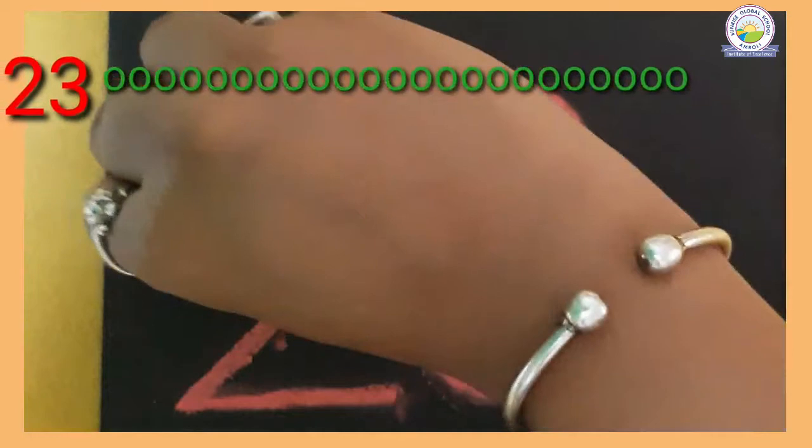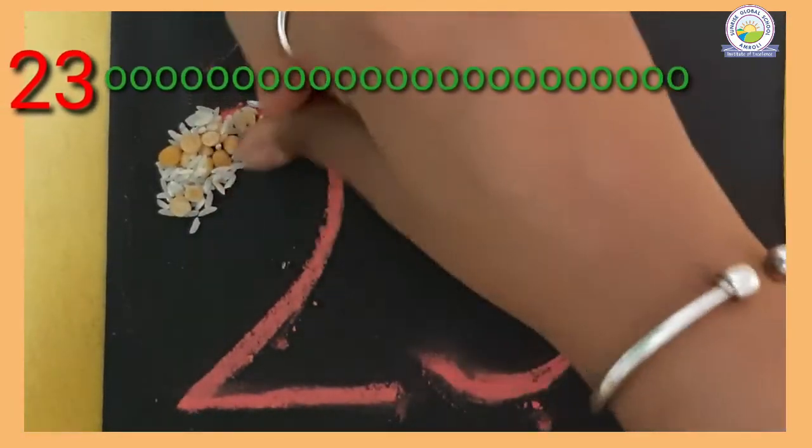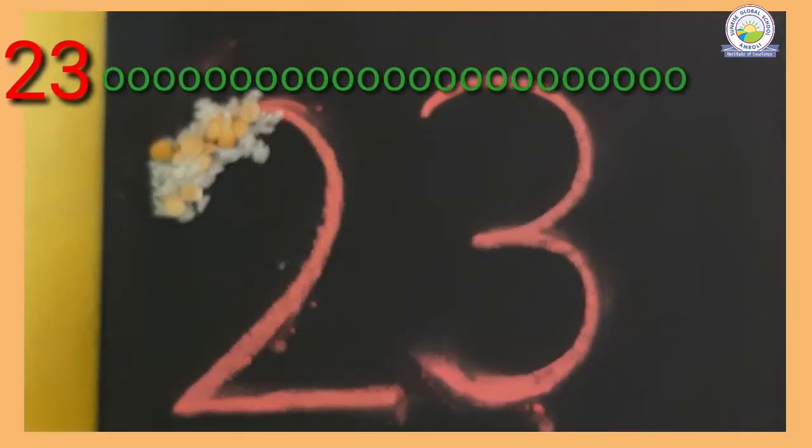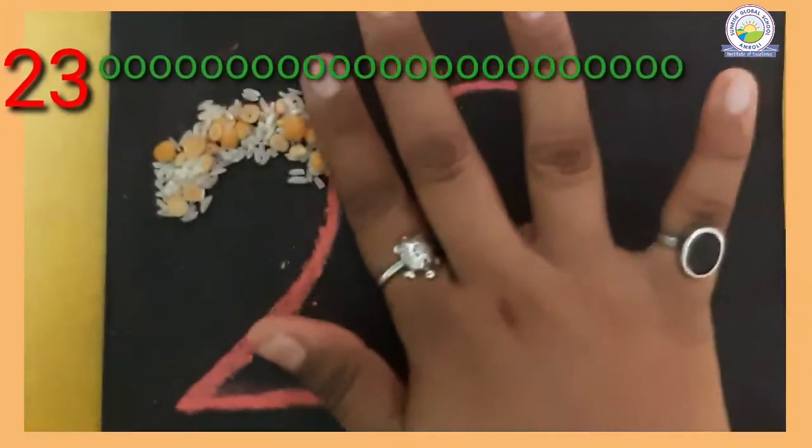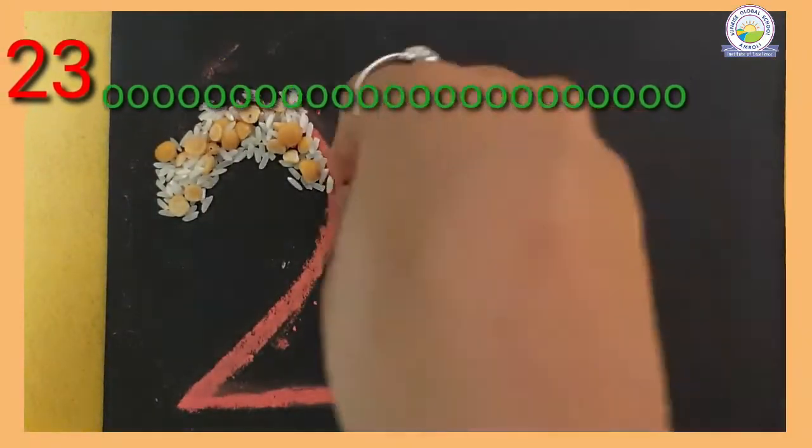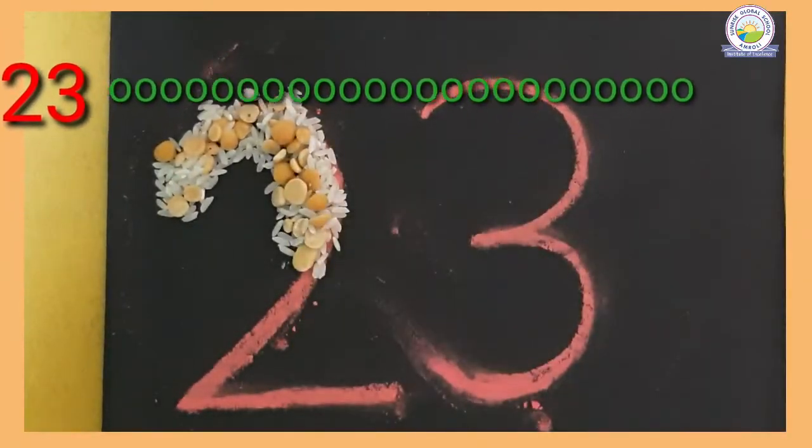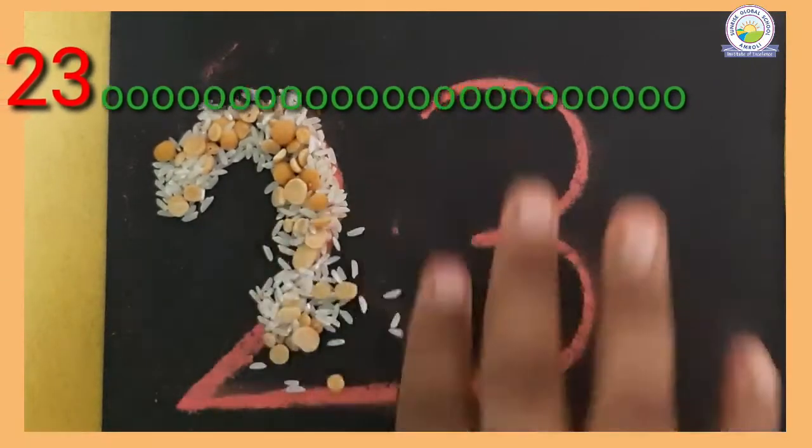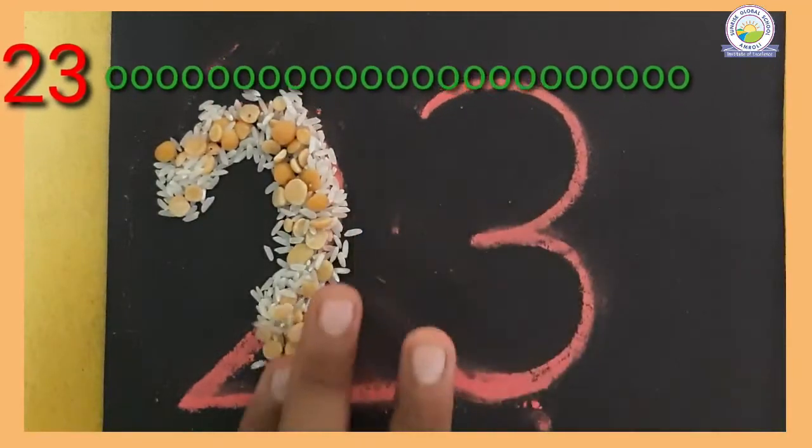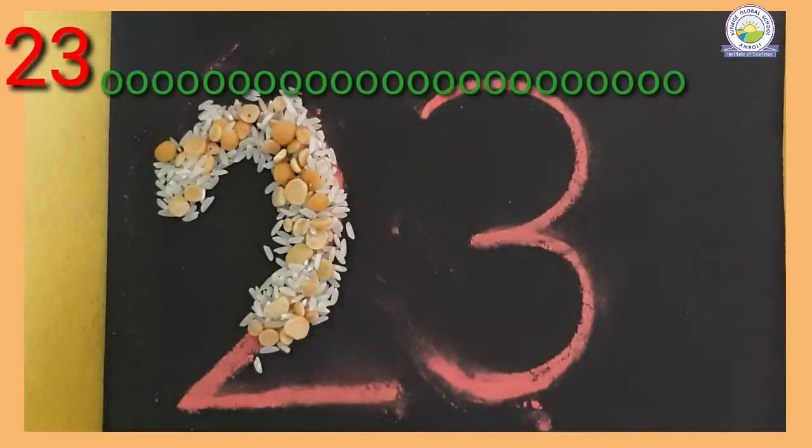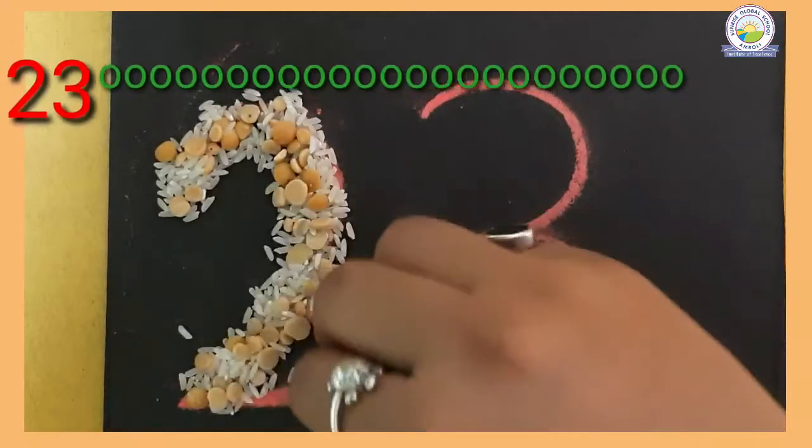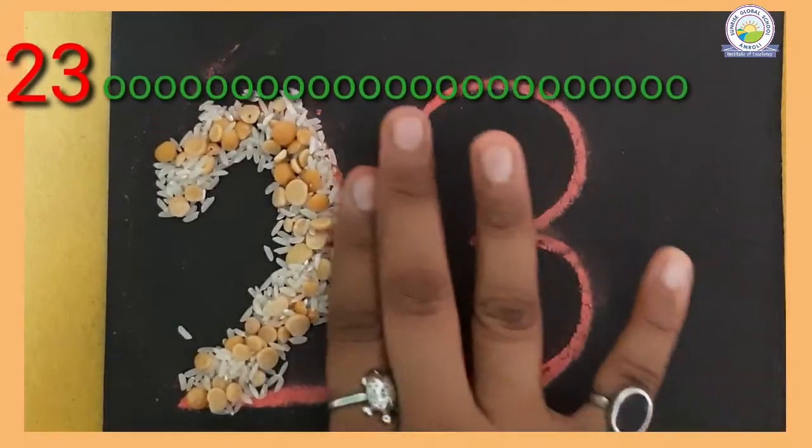So let's do 23. See what I am doing? I took rice and dal and I mixed it. Then I am making 2 with that. 23. 2 and 3 together.